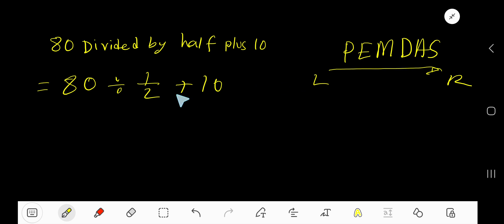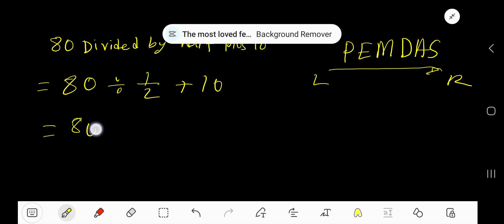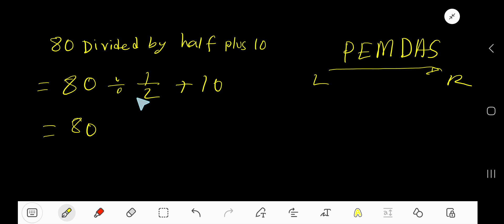That is, look, here we have operation division and addition. So division will get priority according to this formula. So divide 80 by half means just change the division sign to multiplication sign and take the reciprocal of this fraction.